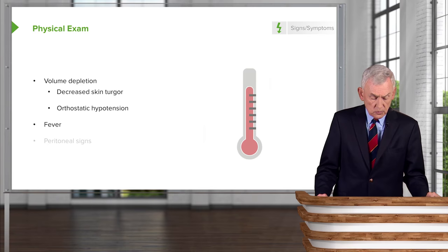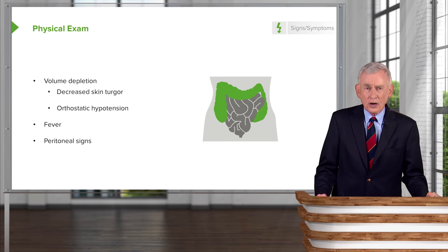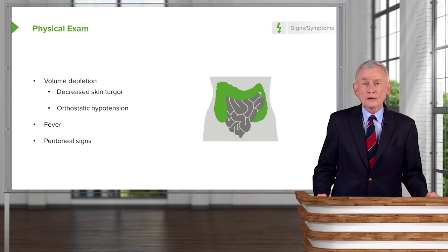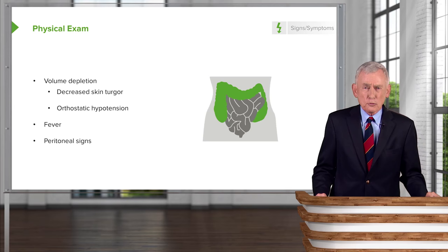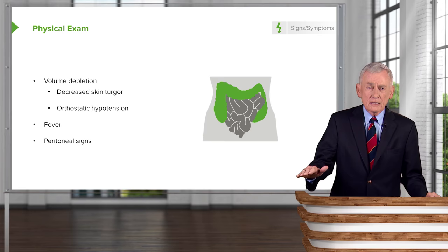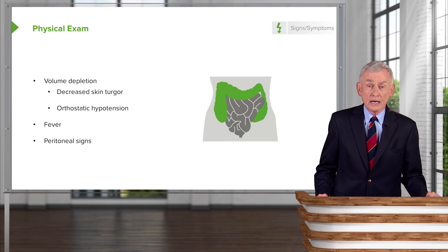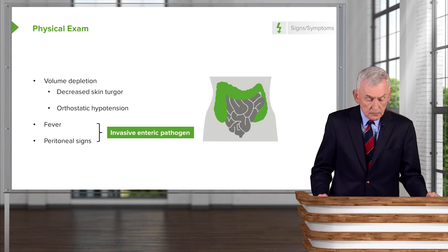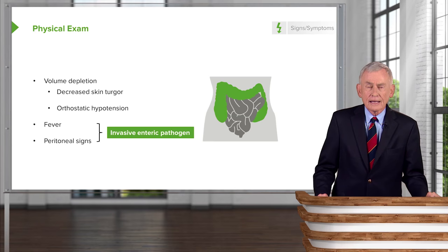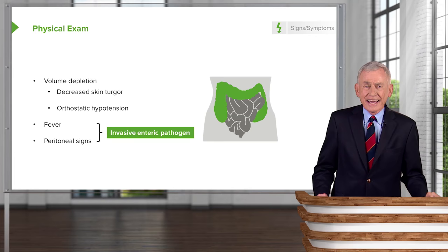Obviously check the patient's temperature and don't miss something like acute appendicitis or other peritoneal signs. It's hard to evaluate children for peritonitis, but a useful trick: if a child comes in and won't let you examine them, have them jump off a small step. If that causes belly pain, the child may well have peritonitis. So if a patient has fever, peritoneal signs, and diarrhea, that usually indicates an invasive enteric pathogen.